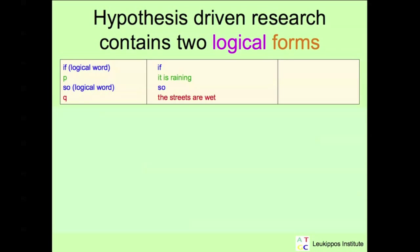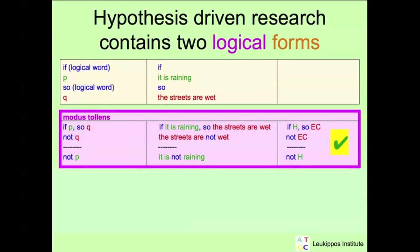The first logical form we find in the hypothesis-driven method is called modus tolerance. If P, so Q. We observe not Q and conclude not P. To make this easier to understand, we will use our example. We know if it is raining, so the streets are wet. We observe that the streets are not wet and conclude that it is not raining. This reasoning is correct, because it is not possible to find a contradictory example.